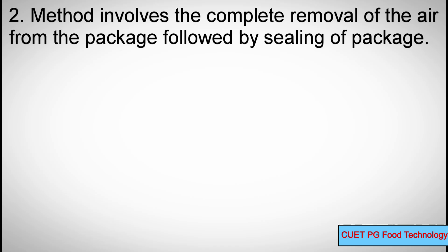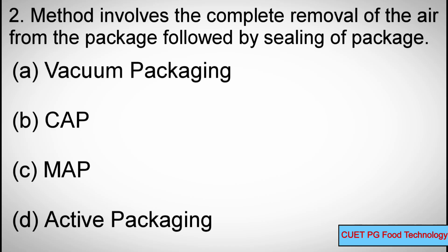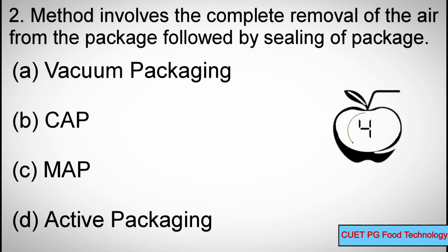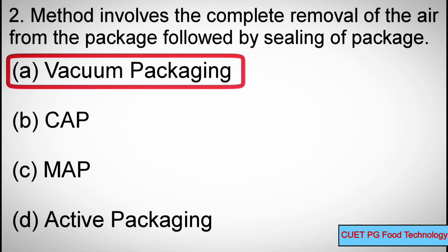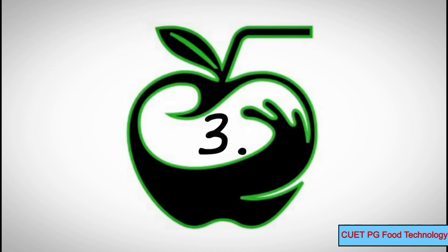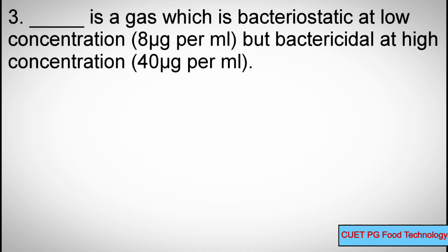Question number two: This method involves the complete removal of air from the package followed by sealing of the package. Options: A) Vacuum packaging, B) CAP, C) MAP, D) Active packaging. Correct answer: A) Vacuum packaging.